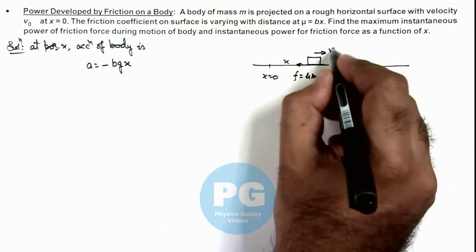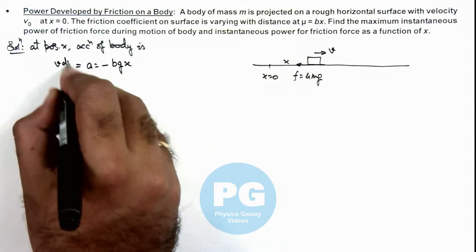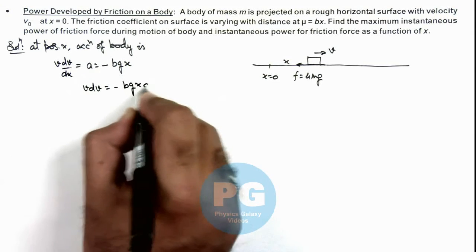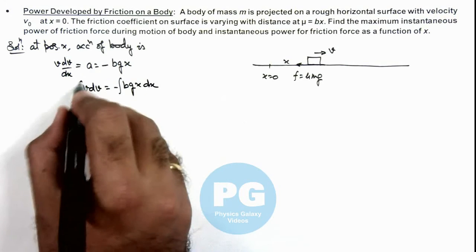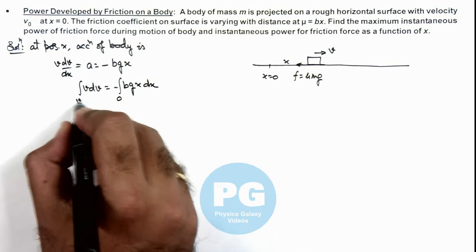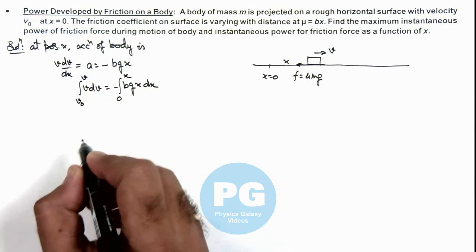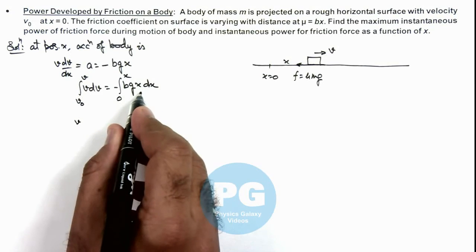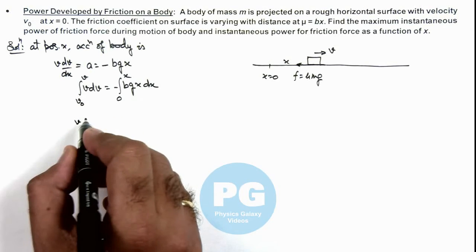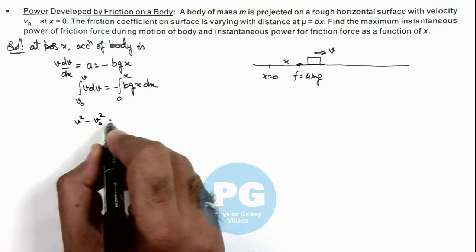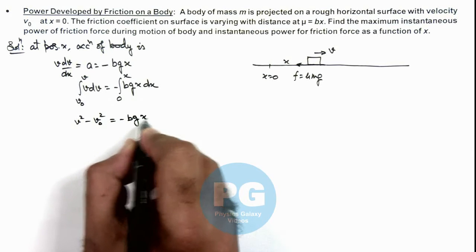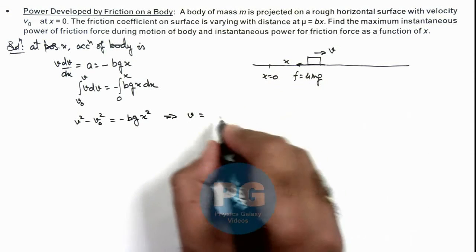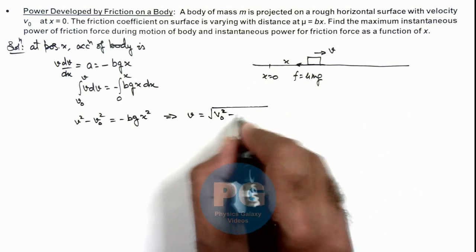If the body is moving with speed v, we can write acceleration as v·dv/dx, and further write v·dv equals minus bgx·dx. Integrating this with limits — at x equal to zero the speed was v₀, and at position x the speed changes to v — we get v²/2 minus v₀²/2 equals minus bgx²/2, so v² minus v₀² equals minus bgx². This gives us the instantaneous speed as a function of position: v equals the square root of (v₀² minus bgx²).